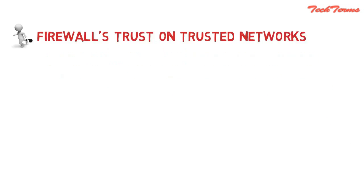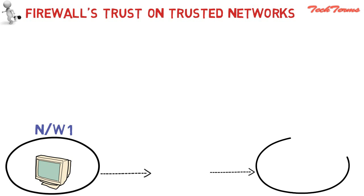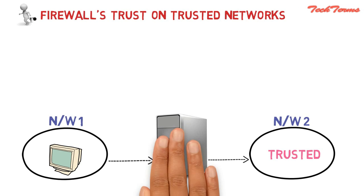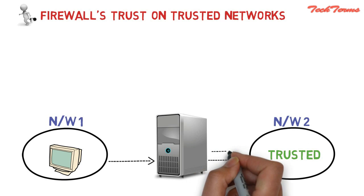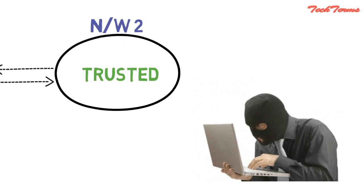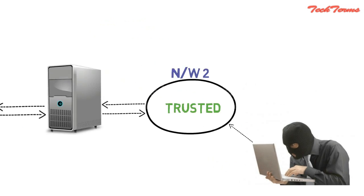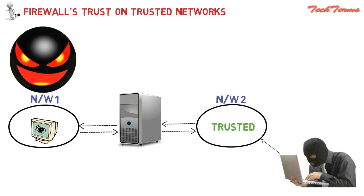The fourth limitation is firewall's trust on trusted networks. Suppose your computer is connected to a network, and your network is connected to another trusted network via a hardware firewall. Since the network is trusted, the firewall allows all the data packets coming from that trusted network to your network. Now, what if a hacker has connected his computer to this trusted network? The firewall will allow all the infected data packets from the hacker to pass to your network and then to your computer, and the hacker can easily hack your computer.